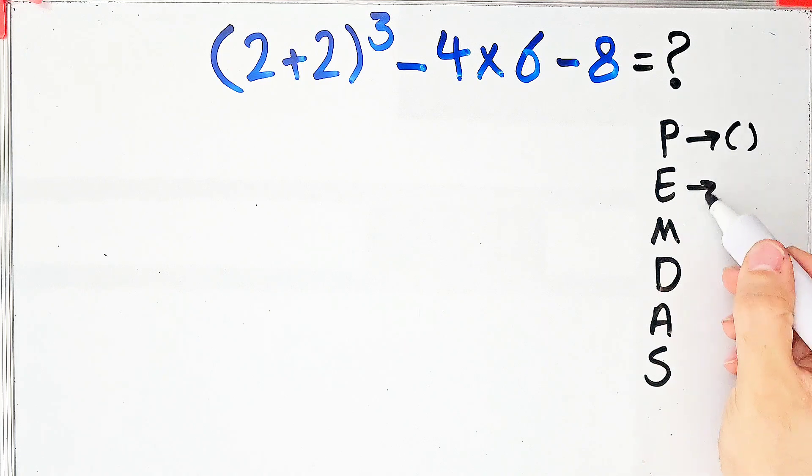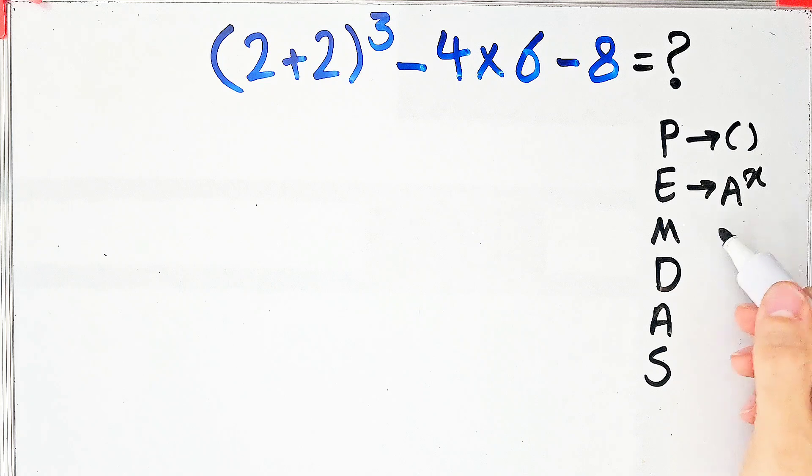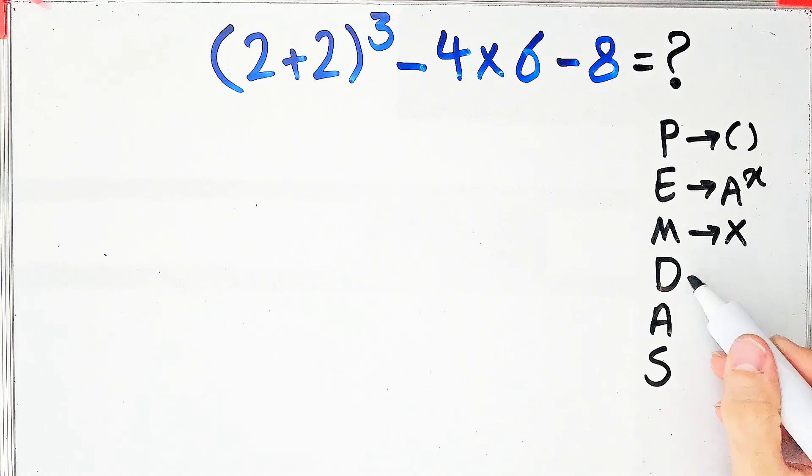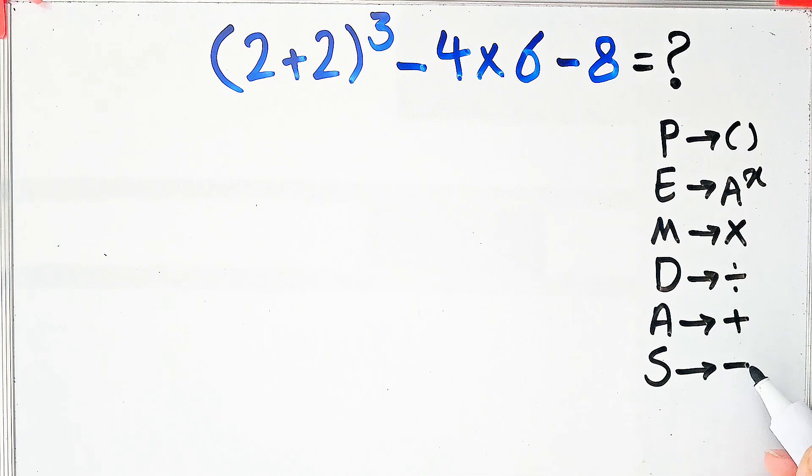P stands for parentheses, E stands for exponent, M stands for multiplication, D stands for division, A stands for addition, and S stands for subtraction.